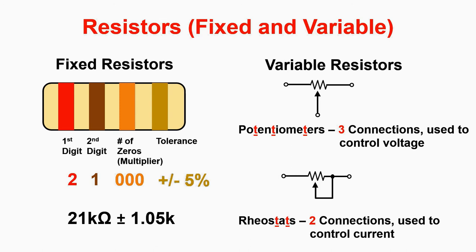Our resistor in the illustration is red, brown, orange, and gold. This means that in our calculator, we can punch in two, one, zero, zero, zero, equals, and you should get 21k ohms.